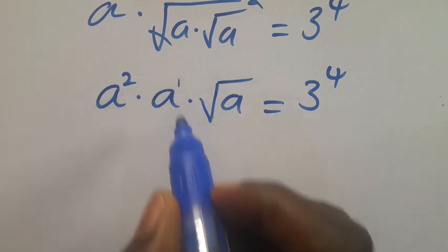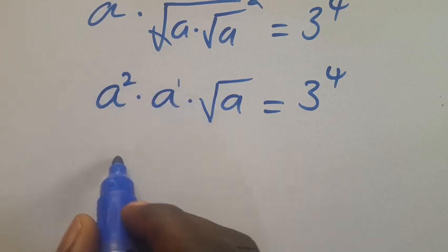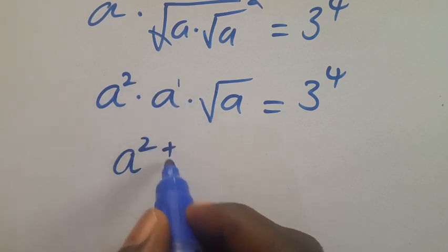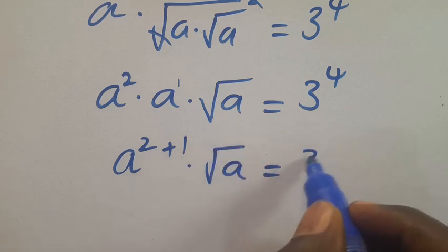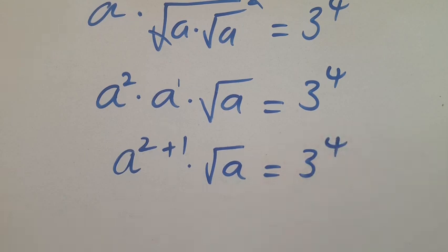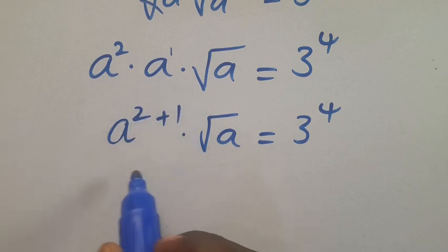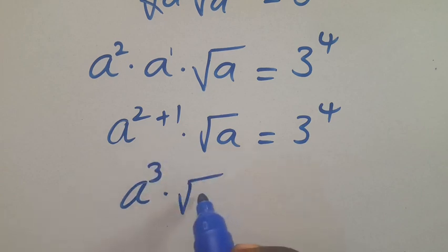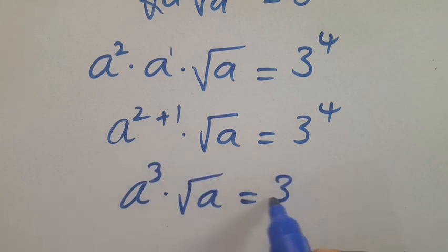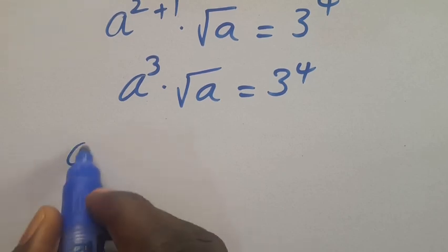This a has power one, and since they have the same base we can combine the powers. We get a to the power of two plus one, multiplied by root of a, equals the right side to the power of two. That gives us a to the power of three multiplied by root of a equals the right side to the power of four.